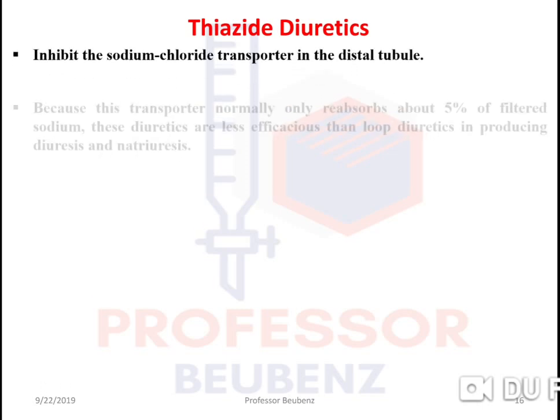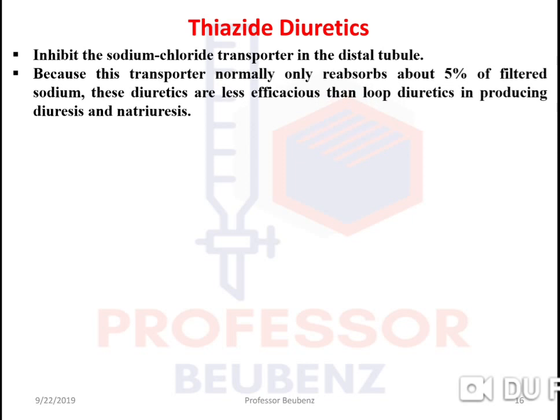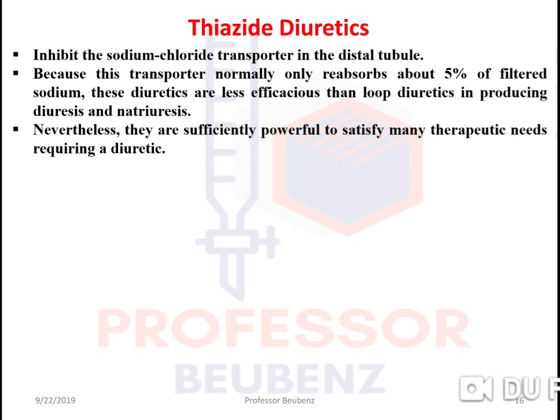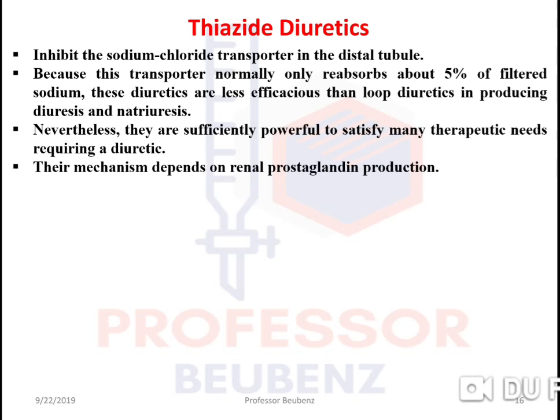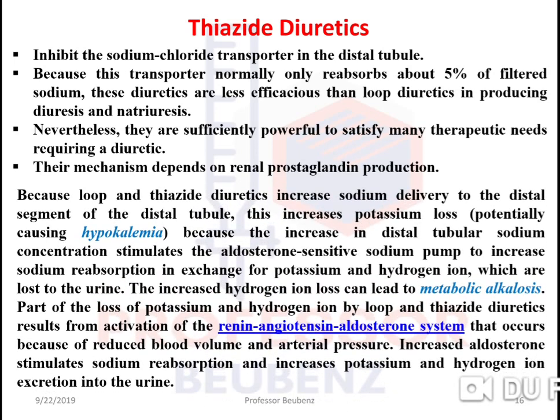Thiazide diuretics: their mode of action is to inhibit sodium-chloride transport in the distal tubule. Because this transporter normally only reabsorbs about five percent of filtered sodium, thiazides are less efficacious than loop diuretics in producing diuresis and natriuresis. However, they are significantly powerful enough to satisfy many therapeutic needs requiring a diuretic. Their mechanism also depends on renal prostaglandin production.